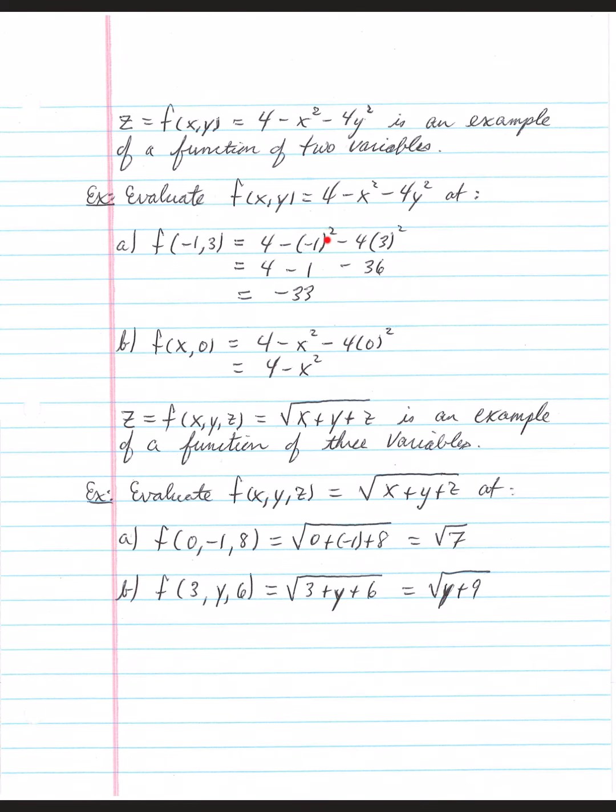Remember to do exponents first. Negative 1 squared is 1 minus 1. 3 squared is 9 times 4 is 36, so minus 36. 4 minus 1 minus 36 is negative 33.